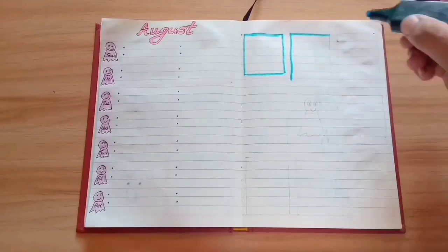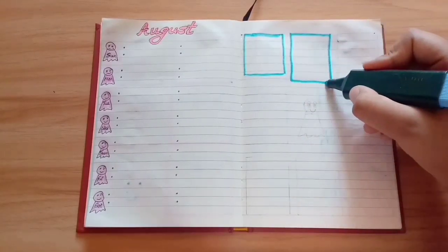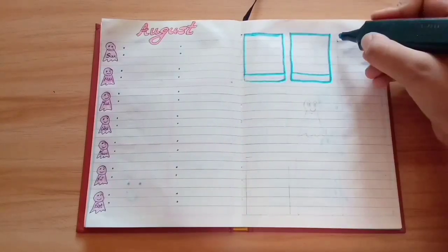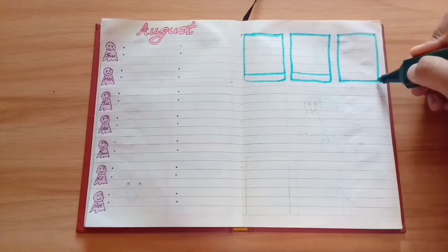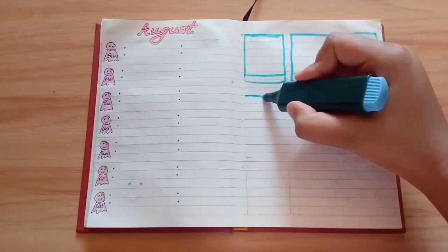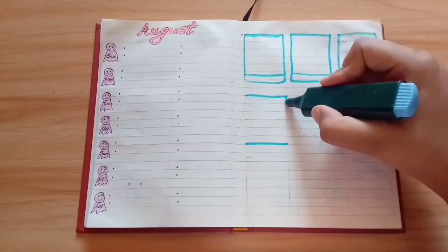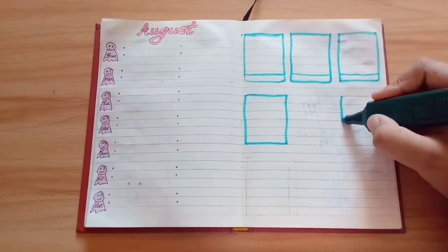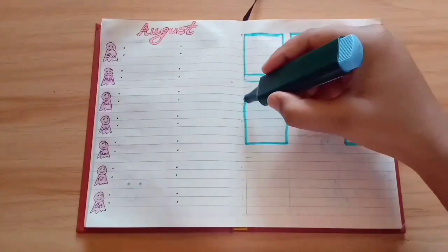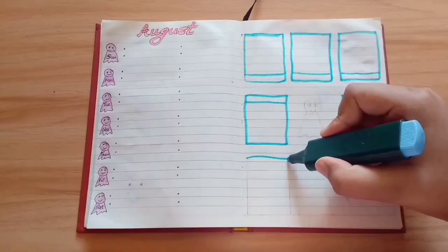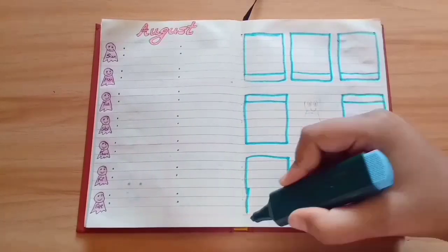Our next spread is also a single sheet weekly spread. In this spread I have added eight different boxes. These boxes do not have to be perfect as you can see, so you can just add a little more color and make it look a little bit more attractive.